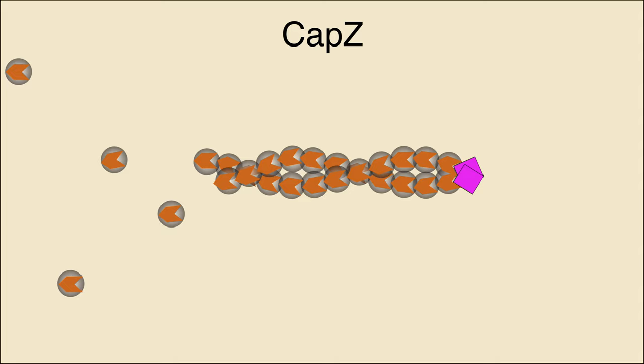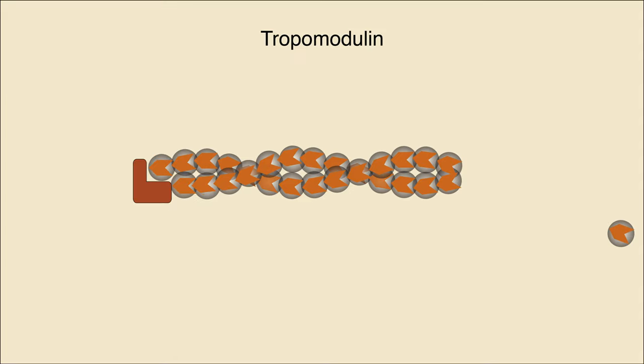Similar processes can happen at the minus end. Tropomodulin changes the rate of disassembly by binding the minus end of a filament to keep ADP-bound monomers from falling off, causing the filament to lengthen.